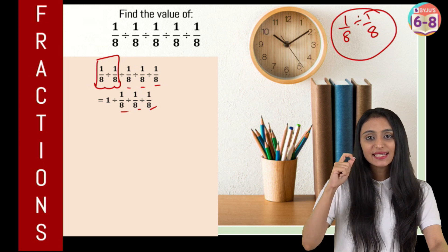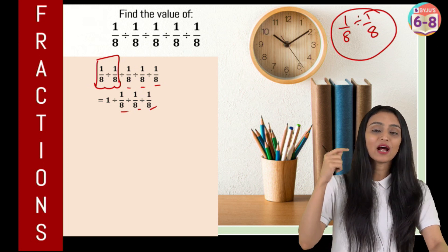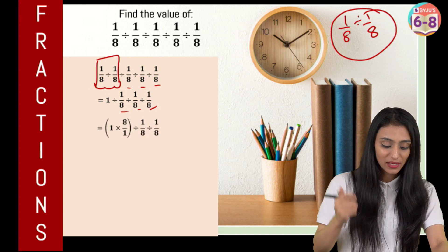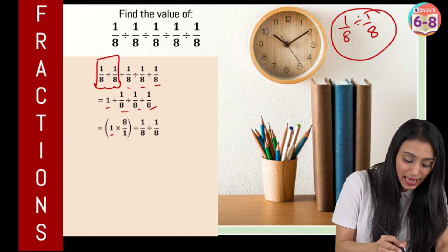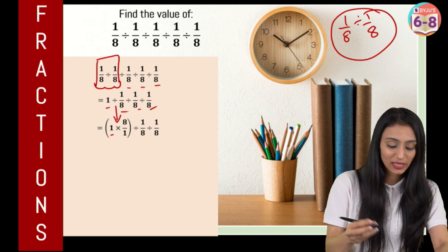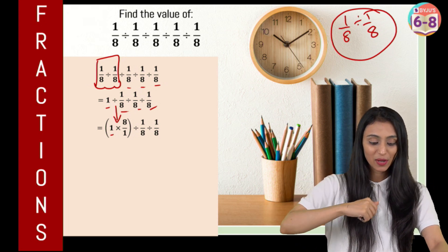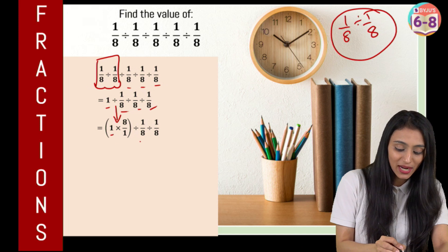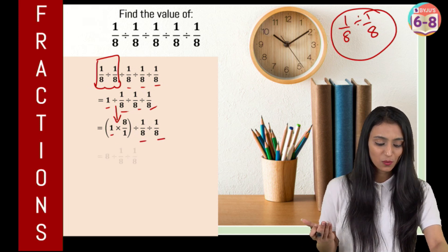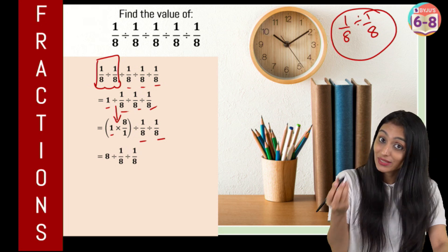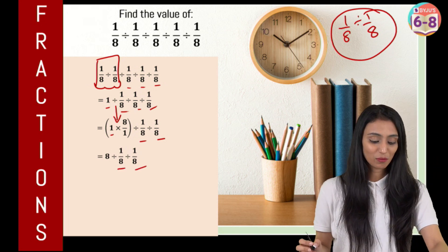We know that whenever we change the division symbol to multiplication, the number after that gets reciprocal. That means the first number remains as it is. Change this division symbol to multiplication — the 1/8 over here will flip, it will become 8/1. So 1 times 8/1, that's going to be 8. Rest of the things as it is: divide by 1/8, divide by 1/8.